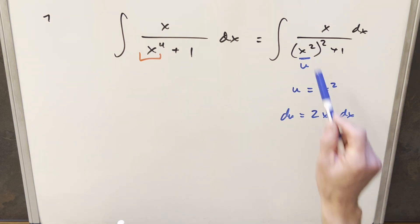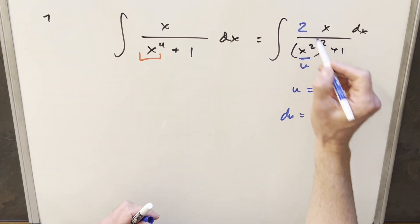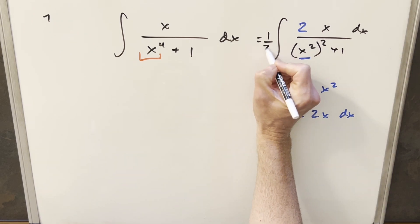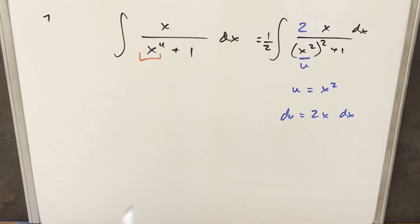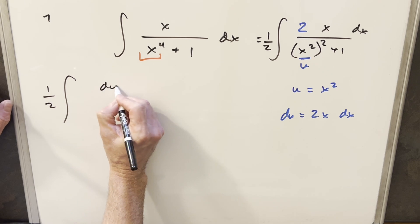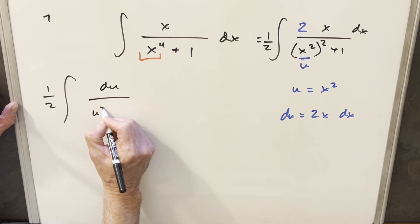But then I can create this in the numerator. If I just multiply it by a 2 here, now we have our du there, but I'll multiply it by a 1 half so I don't change it. And then we'll just go ahead with this.